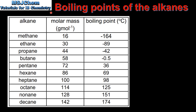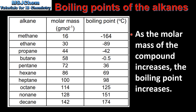Let's start by looking at the boiling points of the alkanes. In this table we have the first 10 members of the alkane homologous series from methane to decane. In the next two columns we have their molar mass and their boiling point. As you can see the molar mass increases as we go from methane to decane, and the boiling point also increases. So from this table we can see that as the molar mass of the compound increases, the boiling point also increases.